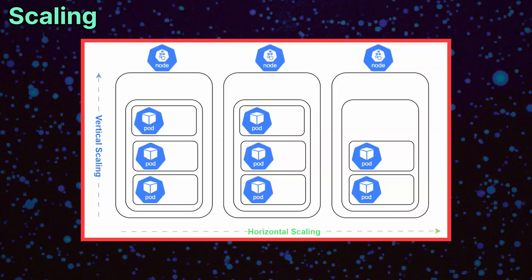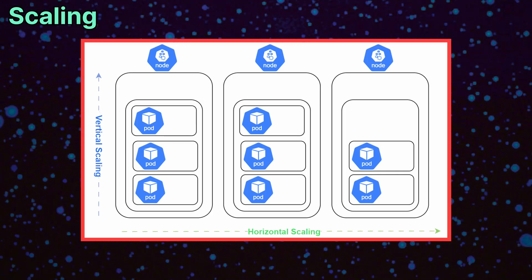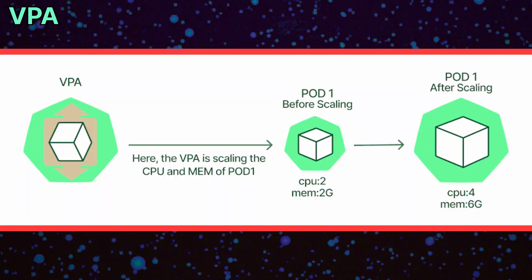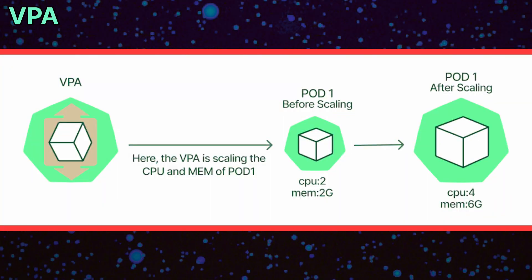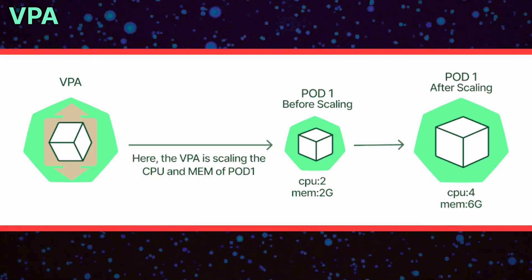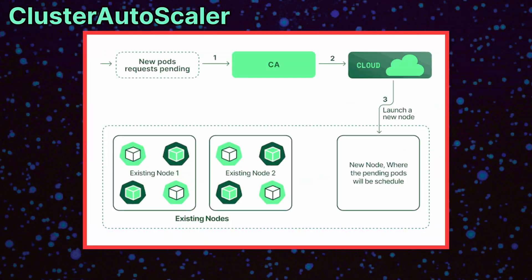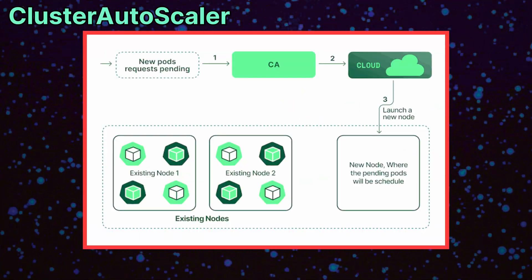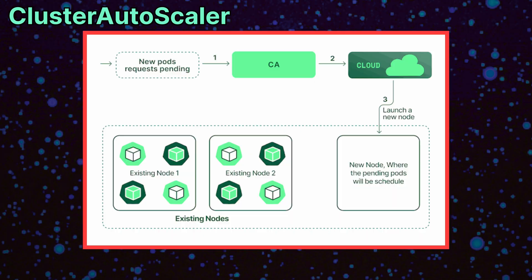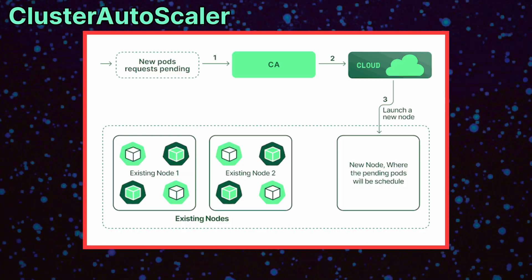Kubernetes also supports automatic scaling. The horizontal pod autoscaler changes the number of pods based on CPU, memory, or custom metrics. The vertical pod autoscaler adjusts resources like CPU and memory requested by pods. The cluster autoscaler works at the node level, adding or removing machines depending on the workload.